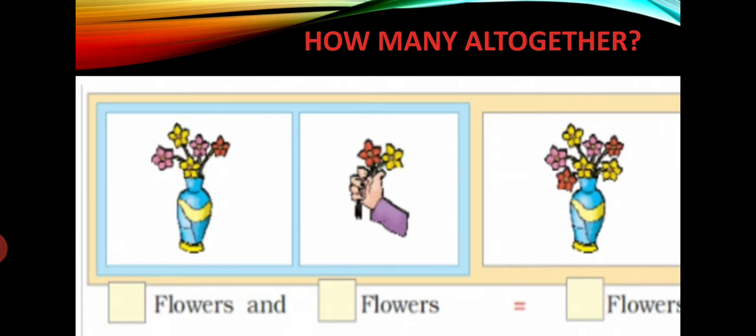So how many all together? In the first box you can see a flower vase. Count the number of flowers in that vase. How many flowers are there? 1, 2, 3, 4, 5. So a box is given below it. You can write down 5 flowers.